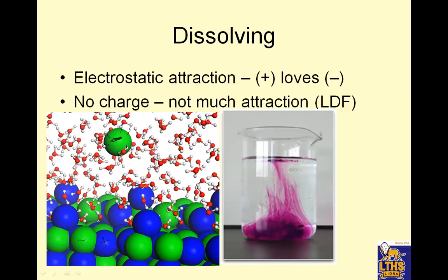We know that these guys are positive and these guys are negative. So if these are strong bonds — and they are — why would they break away? The reason why they break away is you have bajillions of water molecules surrounding it and pulling it away. So this could be, you know, potentially the love of your life — and then 50 seedy individuals try to woo the love of your life away, and sometimes it works.